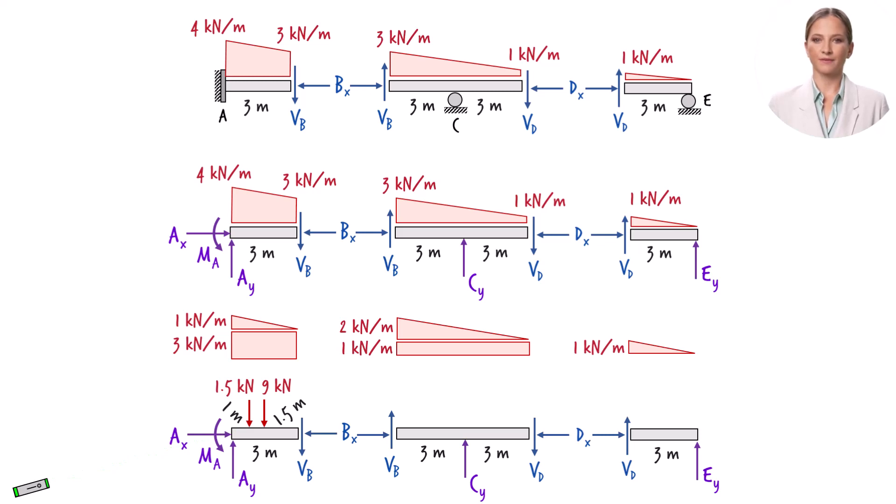The point load representations of these distributed loads are determined in a similar manner. Since the area of this triangle is 1.5, we have placed a point load of 1.5 kN on the beam segment at the geometric center of the triangle.